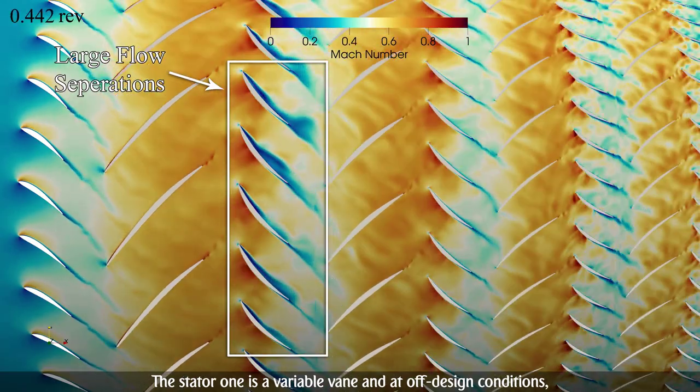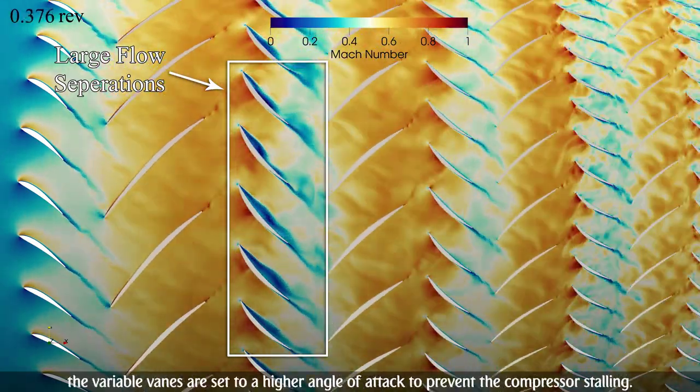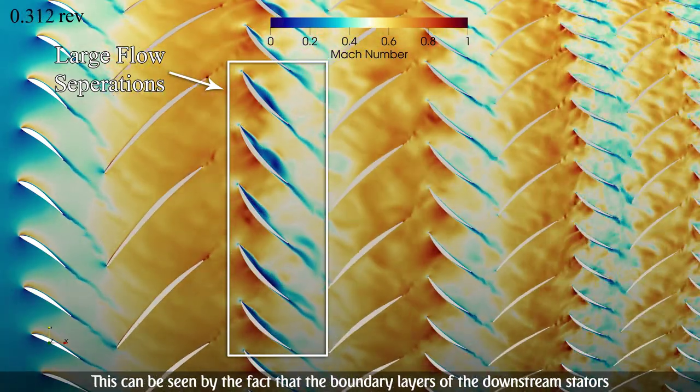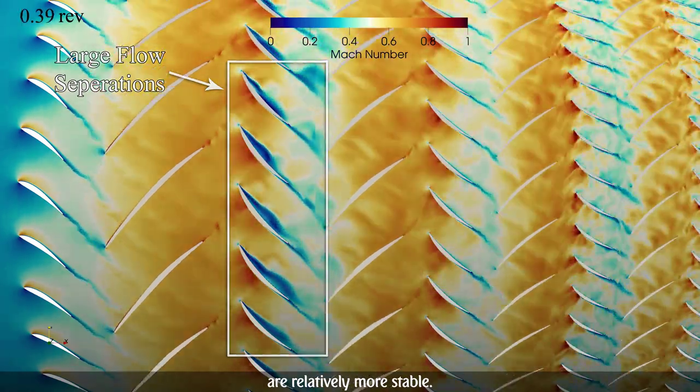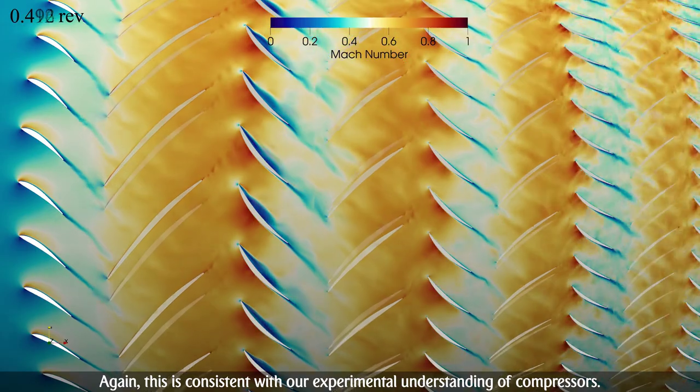The stator 1 is a variable vane, and at off-design conditions, the variable vanes are set to a higher angle of attack to prevent the compressor stalling. This can be seen by the fact that the boundary layers of the downstream stators are relatively more stable. Again, this is consistent with our experimental understanding of compressors.